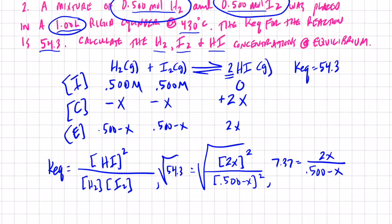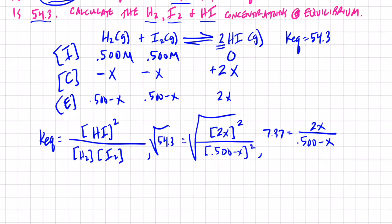So now we have everything in terms of X, so we just need to do a little bit of algebra here, and I'll hold your hand through this. This can be sort of fun. We have 7.37, and we'll go ahead and clear our denominator, so we'll need to distribute that through 0.500 minus X, and that will equal 2X. So let's see, 7.37 times 0.5, that's 3.69,